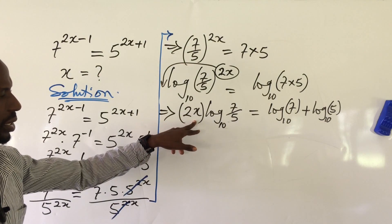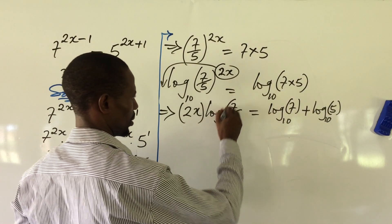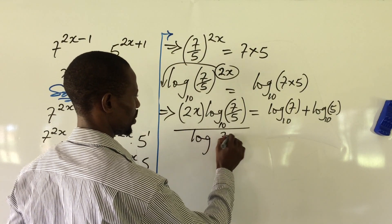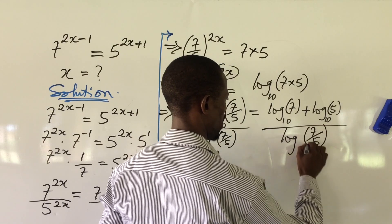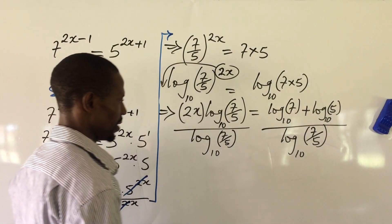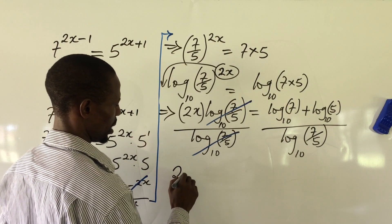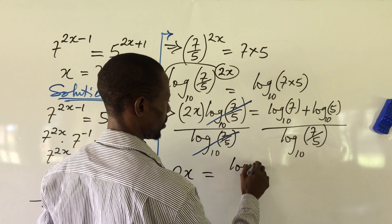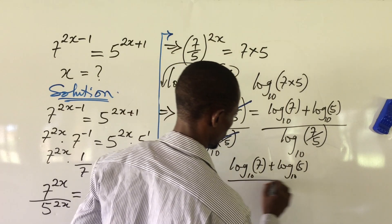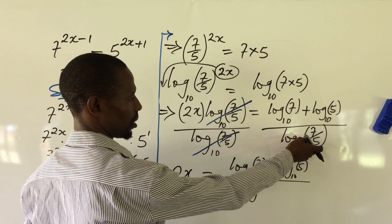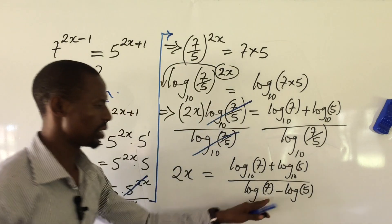We are looking for x. To get x from here, let's divide both sides by log 7 over 5, base 10. On the left-hand side, log 7 over 5 cancels out and we are left with 2x. So we have 2x equal to log 7 plus log 5, base 10, all over log 7 minus log 5, where we apply the divisional law of logarithm, giving log 7 over 5 as the denominator.